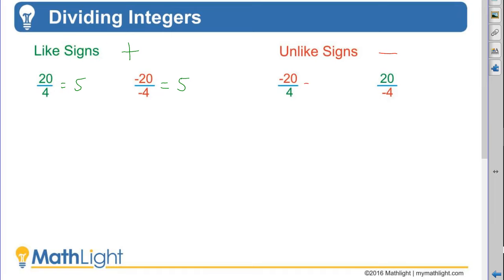So negative 20 divided by a positive 4 is negative 5, and a positive 20 divided by a negative 4 is negative 5.